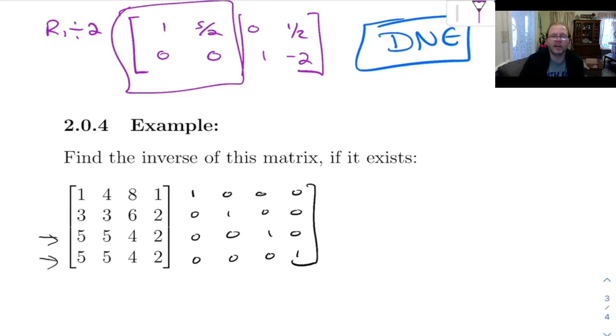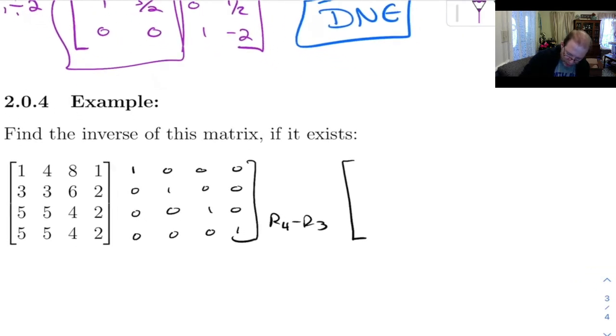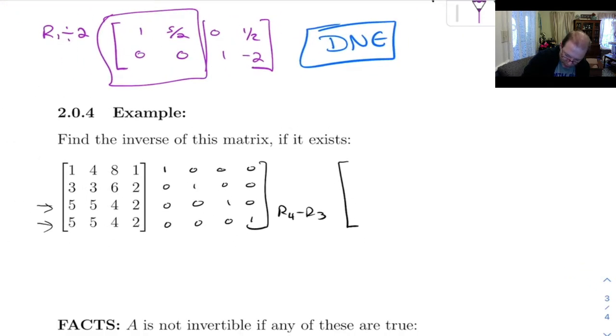These two rows are exactly the same, and so if I were to do row 4 minus row 3, then row 4 is going to turn into 0, 0, 0, 0, and then 0, 0, negative 1, 1.